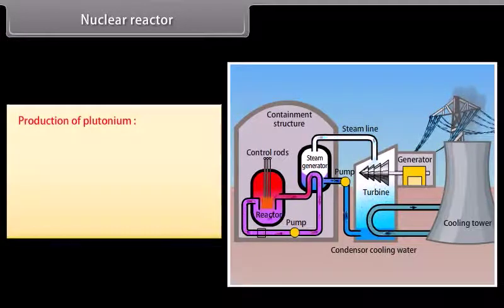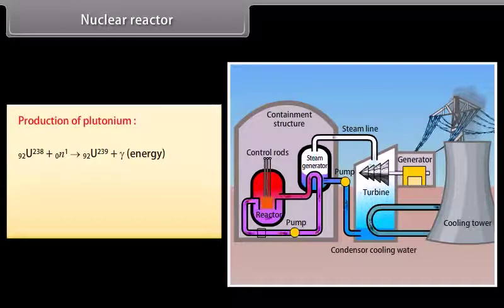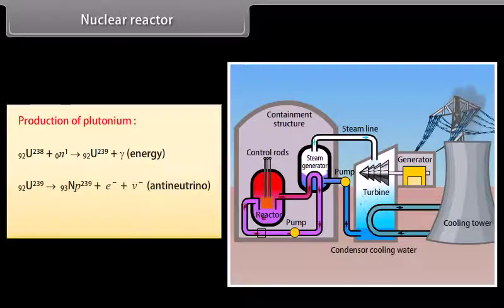Production of plutonium. Some fast neutrons produced in the reactor are absorbed by uranium 238. As a result, it is converted into an unstable isotope uranium 239. Uranium 239 emits a beta particle and is converted to neptunium 239. Neptunium also emits a beta particle and is spontaneously converted into plutonium 239.